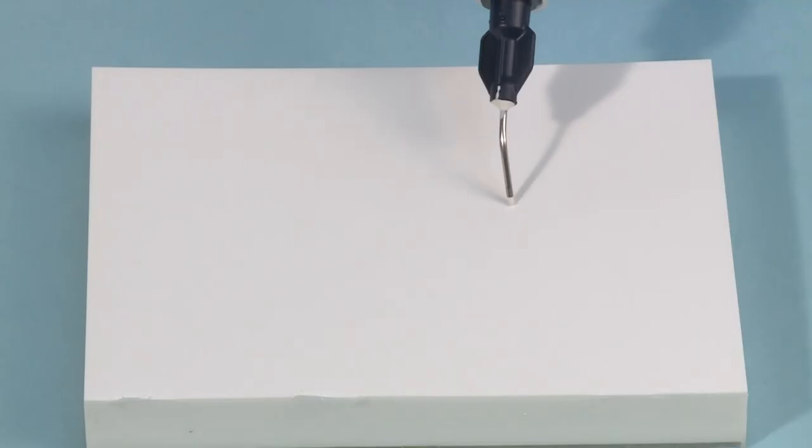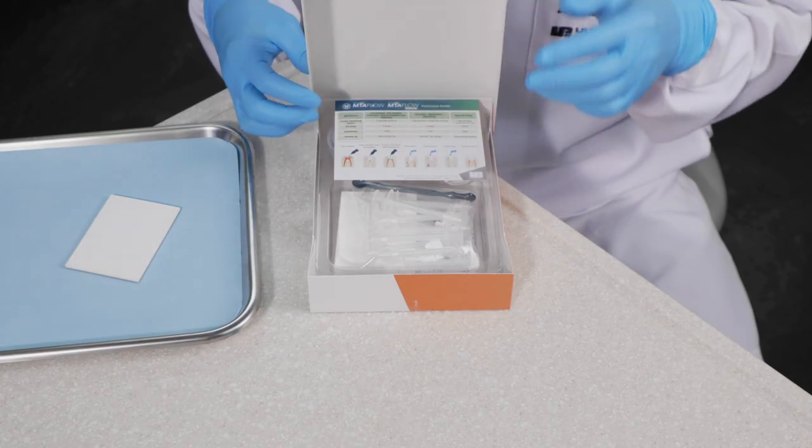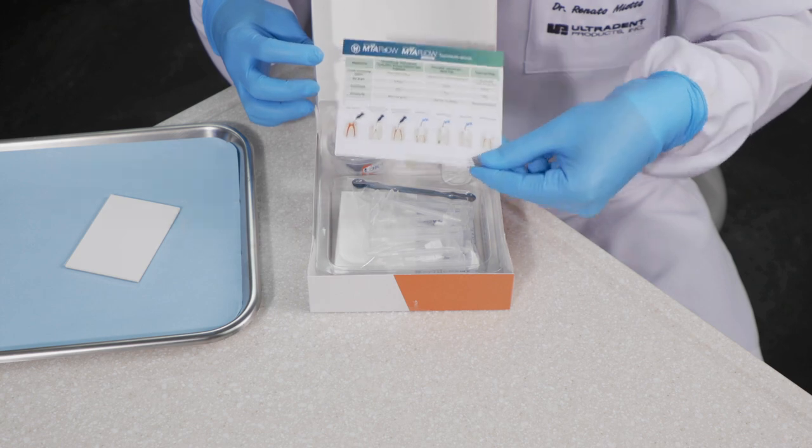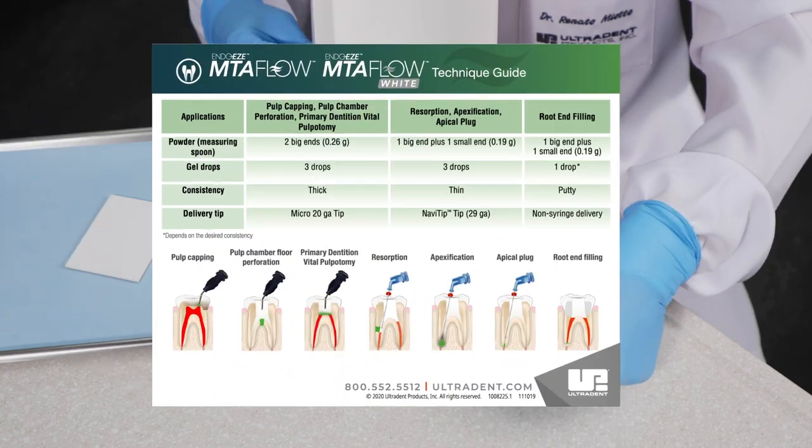The mixing ratio of powder and gel components of MTA Flow is adaptable based on procedure. A guide is included in the kit which will define the ratio of powder to gel to obtain the consistency desired.